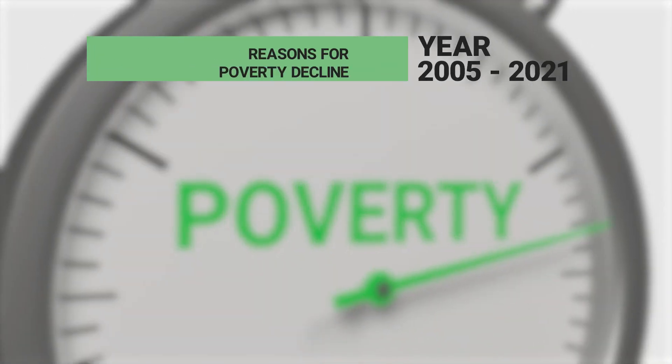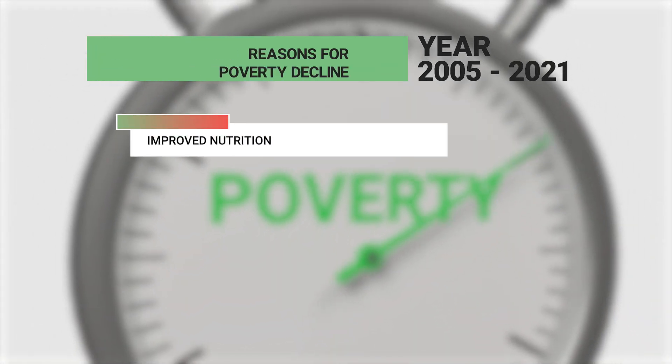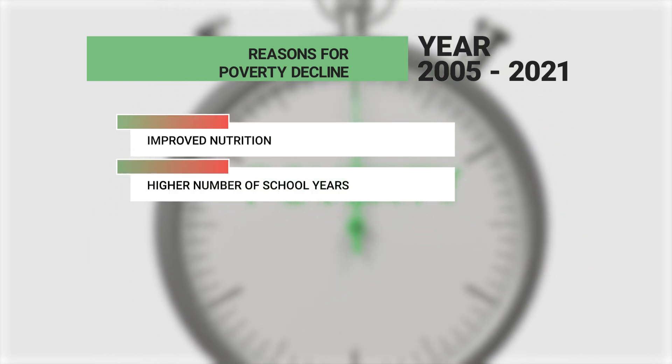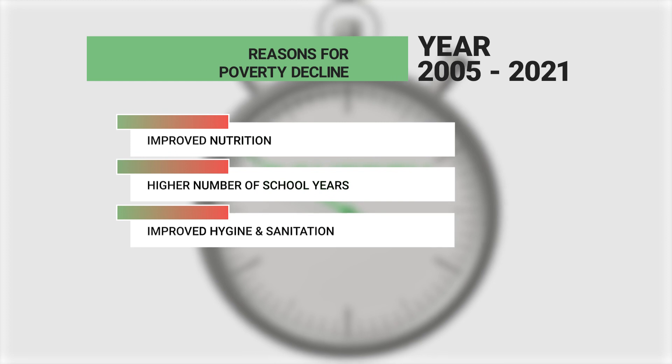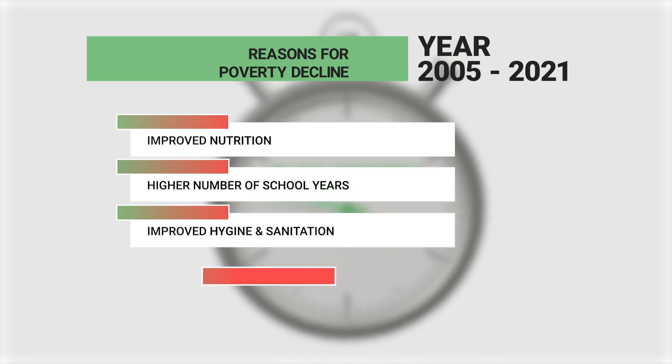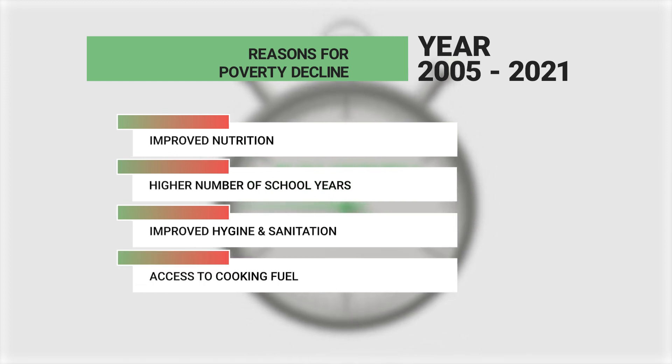Now let's look at the reasons for poverty decline that have also been elucidated in this report: improved nutrition, higher number of school years and more time spent in school, improved hygiene and sanitation, and access to cooking fuel. These four have been identified as the primary reasons for poverty decline. We can make the connection — access to cooking fuel will reduce the labor required at home and release children to go to school. Once they start attaining education, they have a chance to get out of poverty.